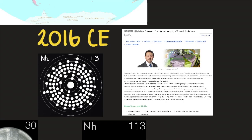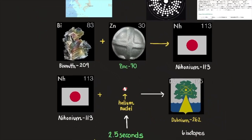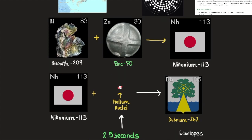So in 2004, scientists at Raiken Nishina Center for Accelerator-Based Science in Saitama, Japan announced the production of one atom of element 113, which was formed when bismuth 209 was fused with zinc 70, creating nihonium 113.